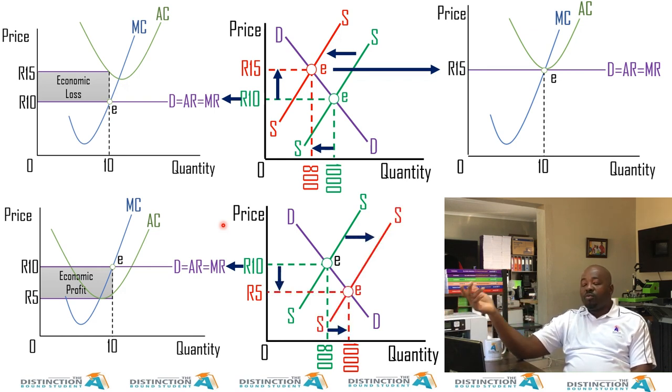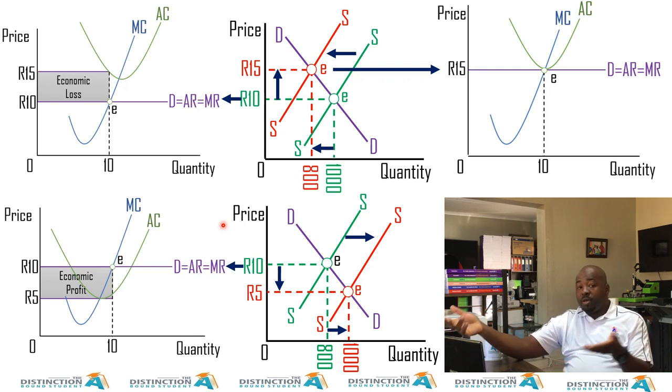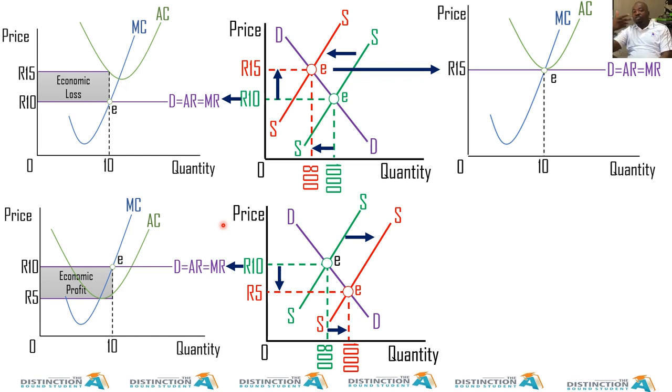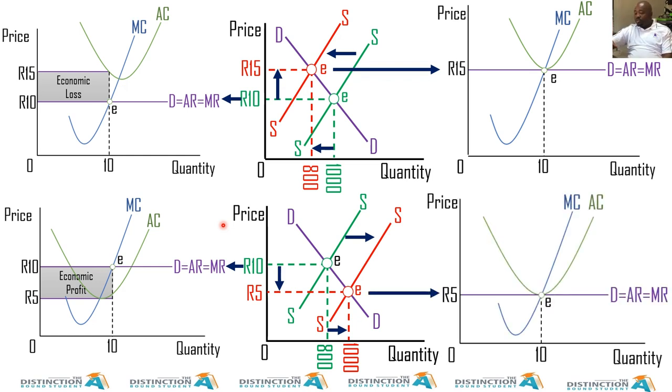Demand will not be affected because here we are talking about firms, suppliers of a product, because demand comes from the consumers. So what's happening here is supply related. Firms will become more in the sense that the economic profit will attract new firms into the industry. And when those new firms enter, supply is going to increase. And supply increasing will cause the price to drop from 10 to 5 and causing quantity to increase.